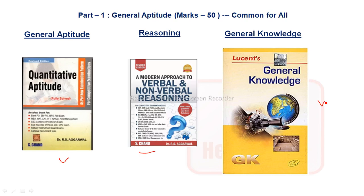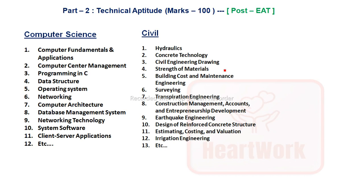Now Part 2 — Technical Aptitude. There will be 100 questions for the Engineering Assistant Trainee post. This time BL is recruiting for Computer Science and Civil branches only. For Computer Science, the syllabus includes Computer Fundamentals and Applications, Database Management, Programming in C, Operating Systems, Networking, and Computer Architecture — whatever you studied in your diploma.